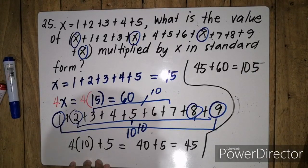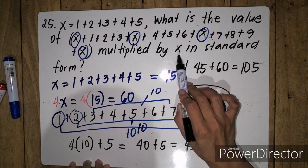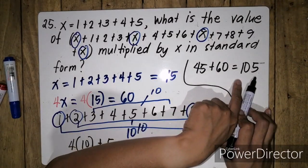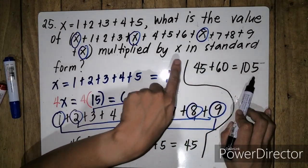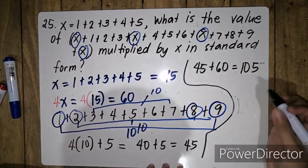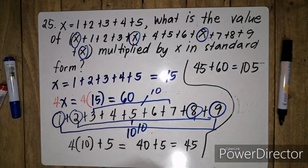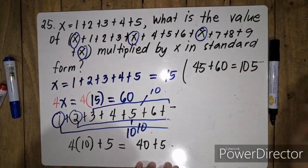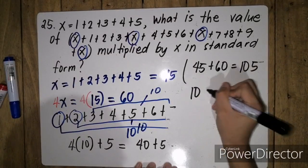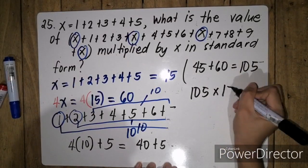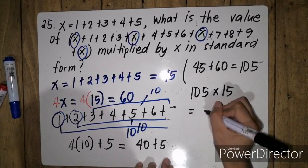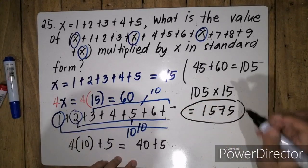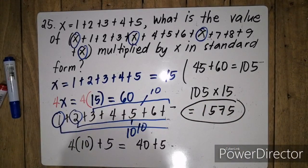And our final answer should be multiplied by x. So i-multiply natin si 105 kay x. And x is 15. So our answer is 105 times 15, which is the value of x, which is equal to 1575. So our answer for this problem is 1575.